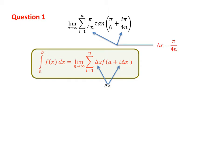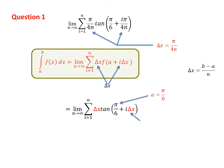Once we have delta x, we plug it in and the limit takes a cleaner form. Now we can catch our a. Go to the delta x term that has the i index — you are inside the argument of the tangent. Whatever is added or subtracted alongside i times delta x is your a. So our a is pi over 6. Once we have a, we use the formula and plug in a and delta x to solve for b. So b equals pi over 12.